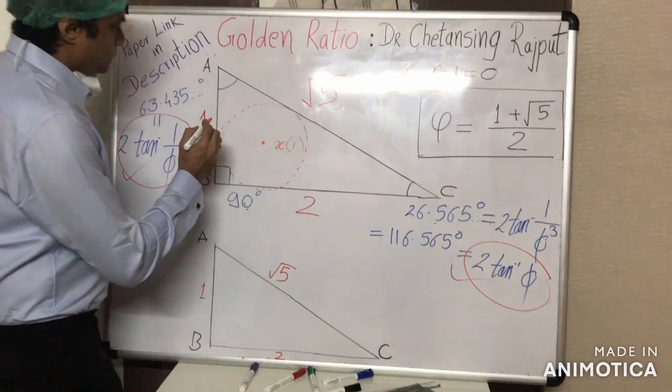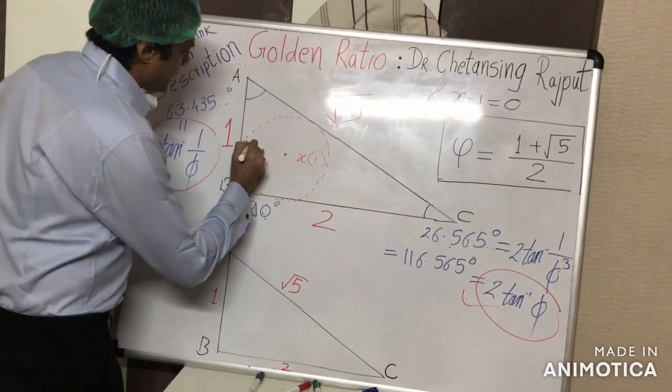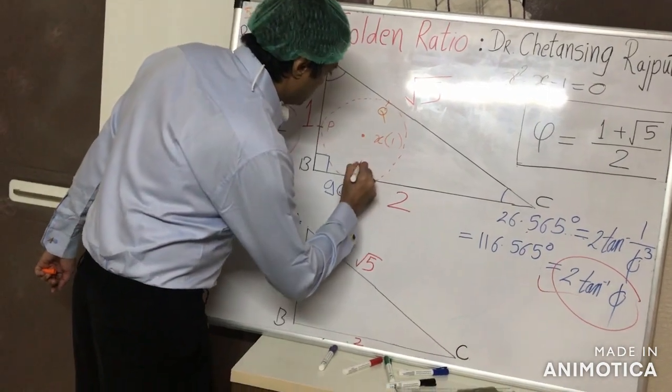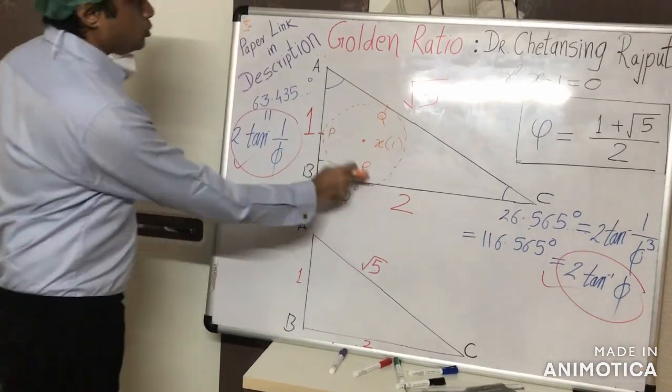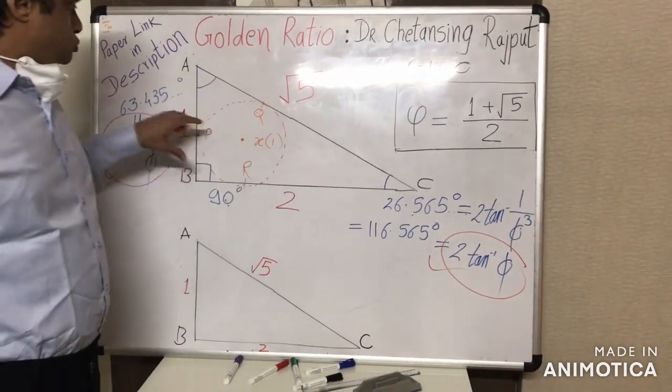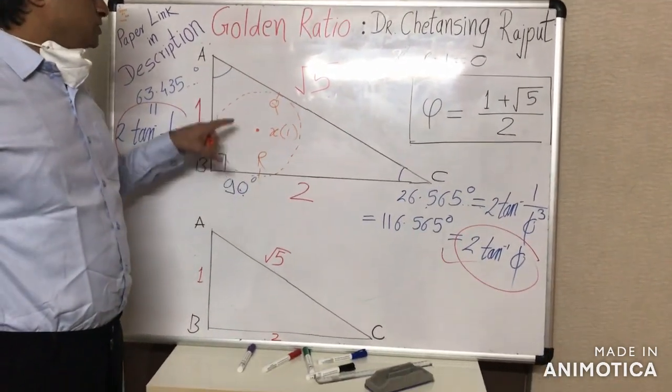Now if we draw an incircle with center at point X1, this incircle of the triangle touches the sides of triangle at points P, Q, and R.